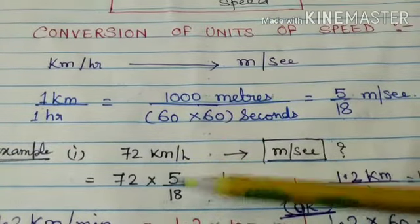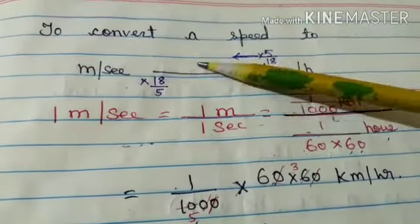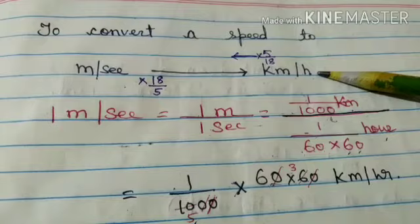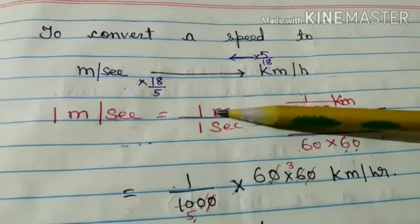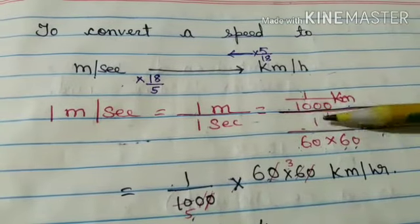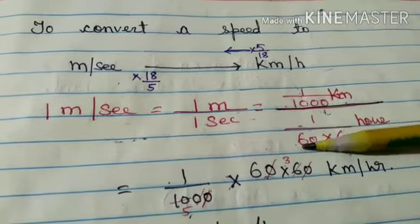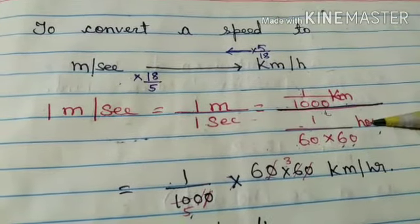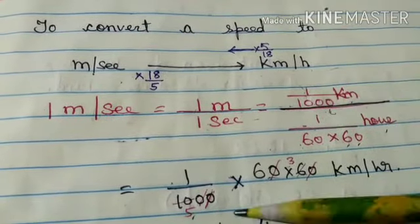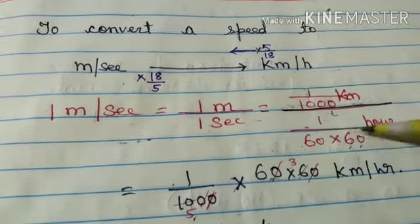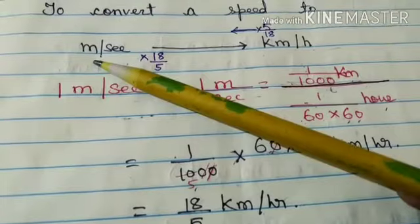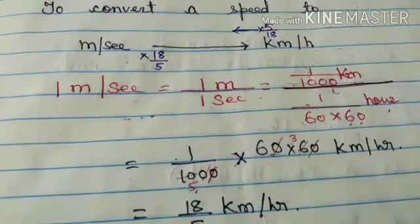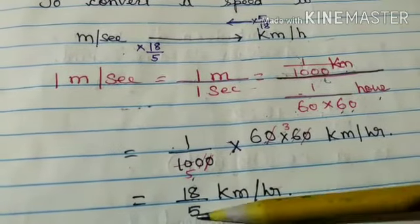The next conversion is from meters per second to kilometers per hour. Since meter is the smaller unit, we write 1/1000 kilometers, and for seconds we write 1 out of 3600 hours. After simplifying — where dividing flips to multiplication — we get 3600 divided by 1000, which simplifies to 18/5 kilometers per hour.